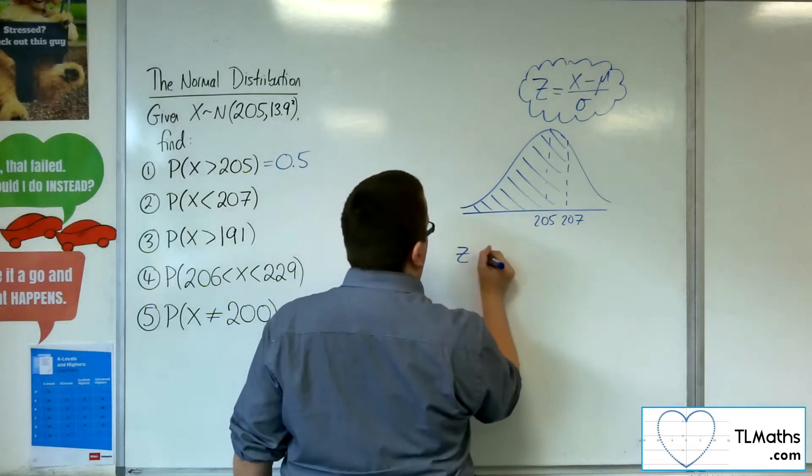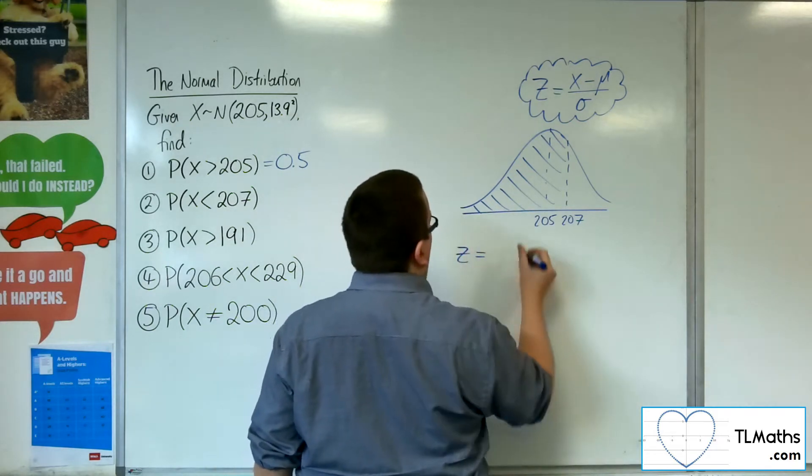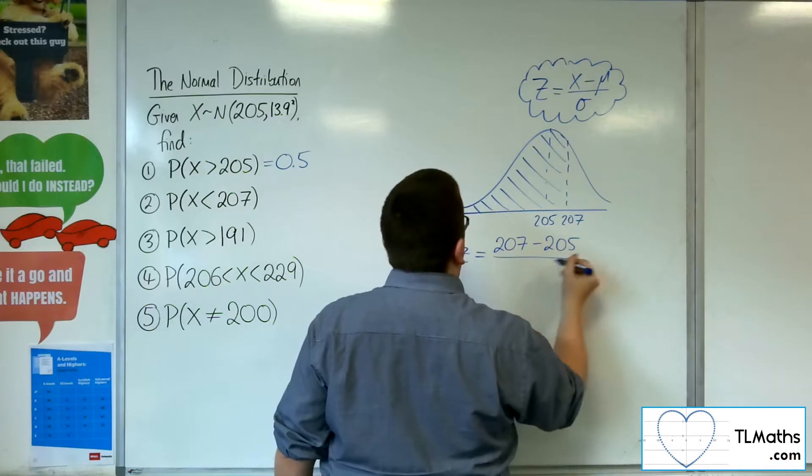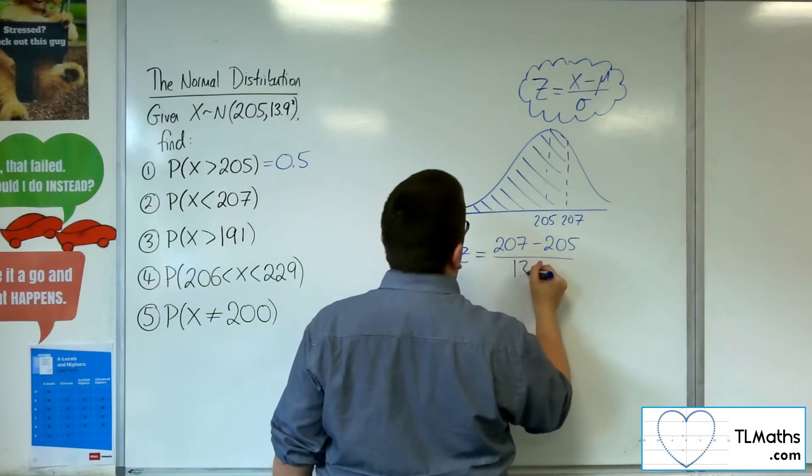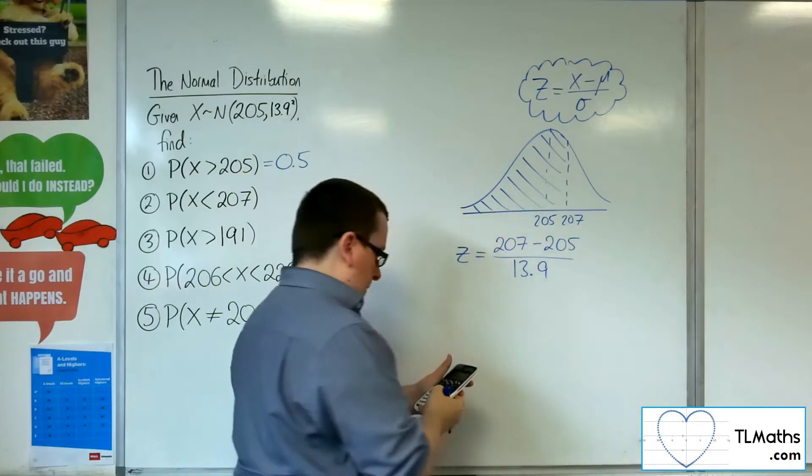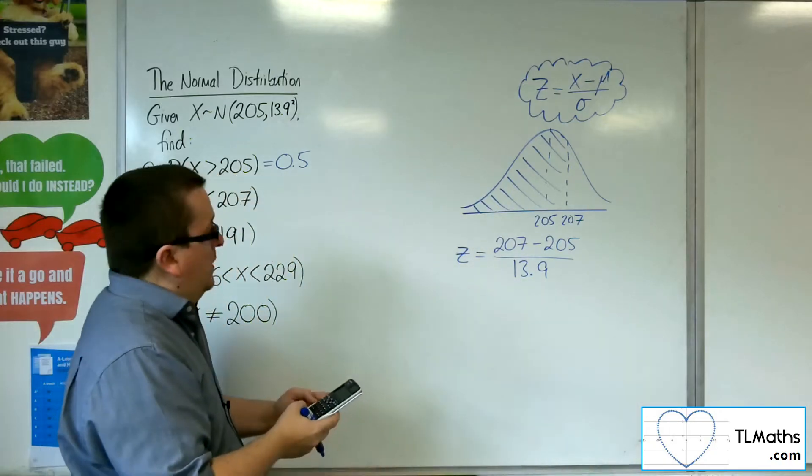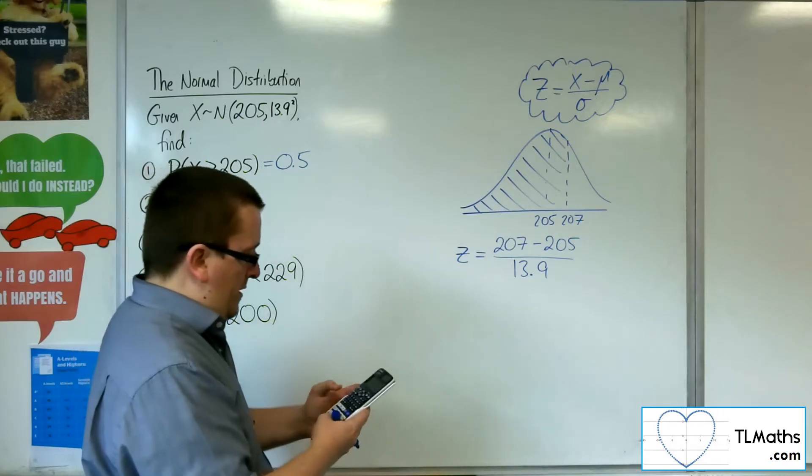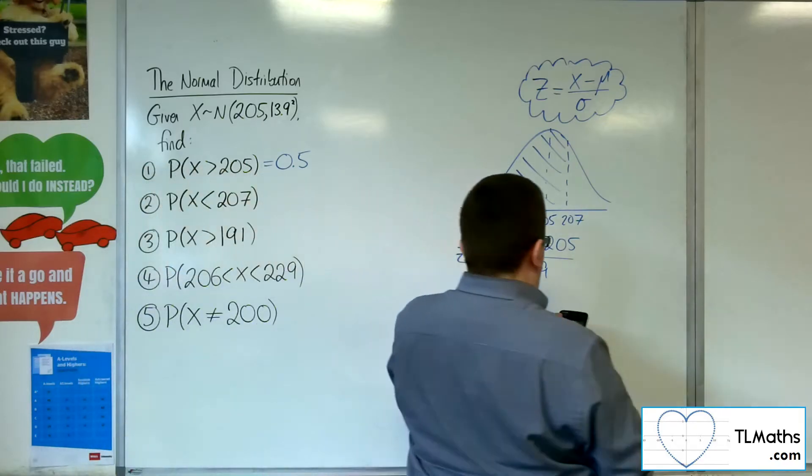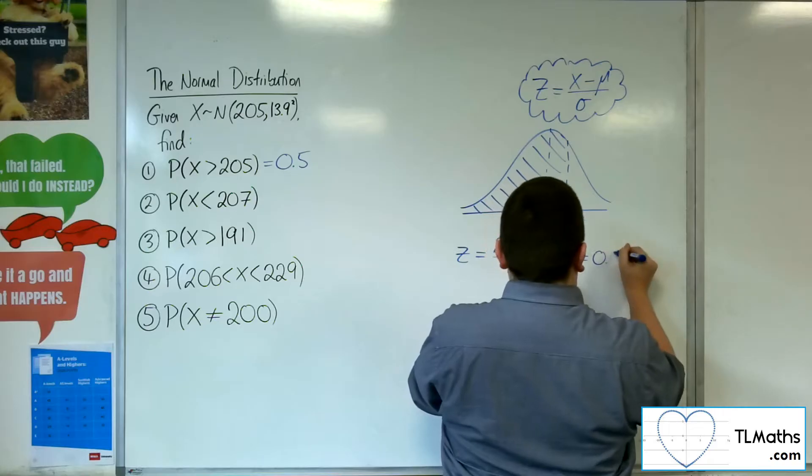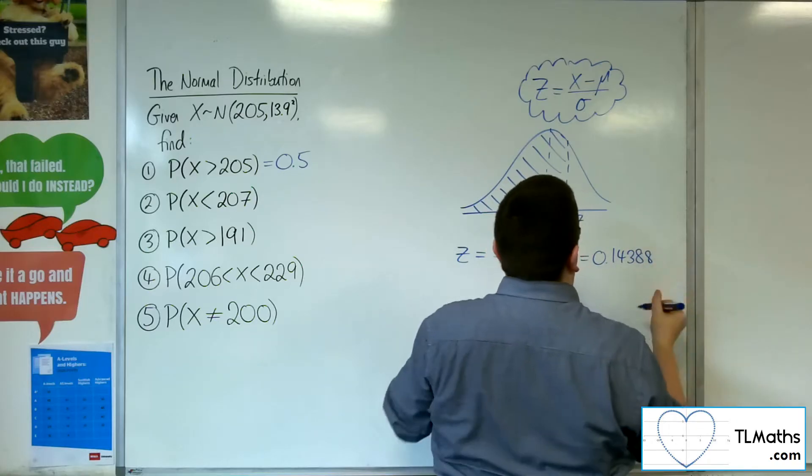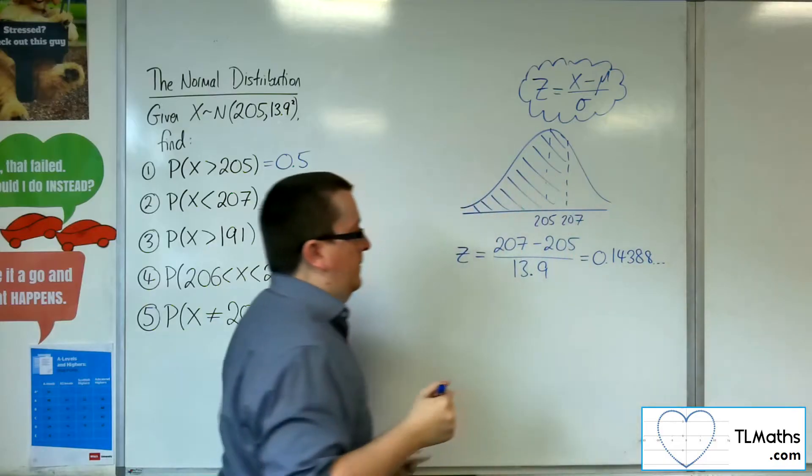So the z value is equal to X, 207, take away the mean, 205, divided by the standard deviation, 13.9. So we get 207 take 205, divided by 13.9, and we get 0.14388. That will be enough.